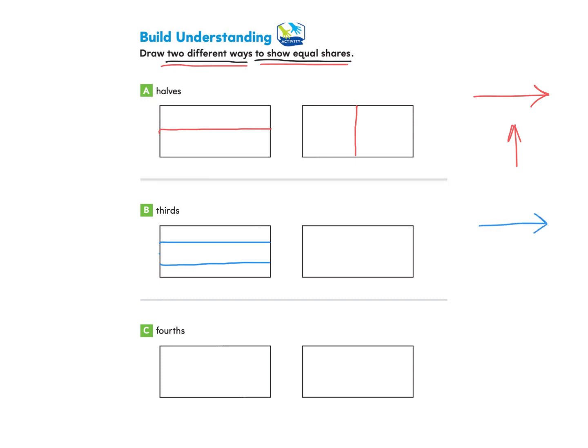Now I'm going to make thirds for the next rectangle going vertical, up and down. I find that middle point right here and then I go over just a little bit and make a line up and down, and I go over just a little bit from the other midpoint and make a line up and down. So now I have three equal shares, or thirds.